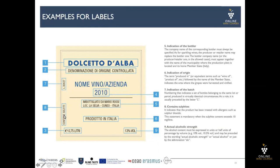Then we have the indication of the batch, the content of sulfites, and the actual alcoholic strength. The alcohol content must be expressed in units or half units of percentage by volume — for example, 10 or 10.5 — and may be preceded by the wording 'actual alcoholic strength,' 'actual alcohol,' or just the abbreviation 'alc.'